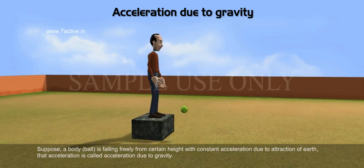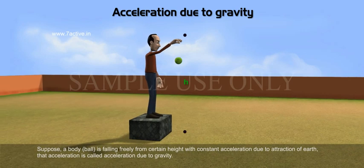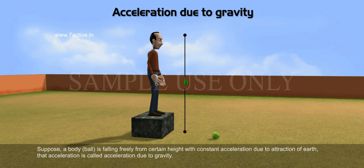Suppose a body is falling freely from a certain height with constant acceleration due to attraction of earth. That acceleration is called acceleration due to gravity.